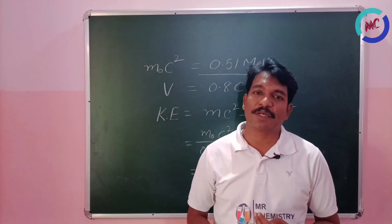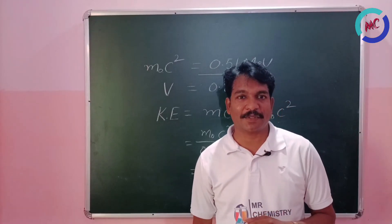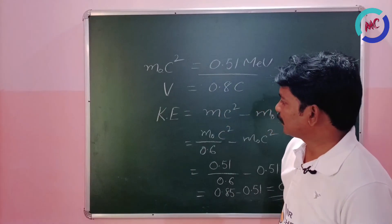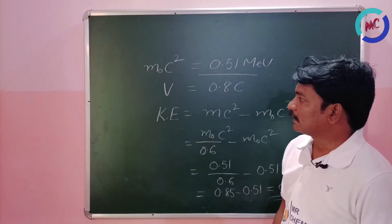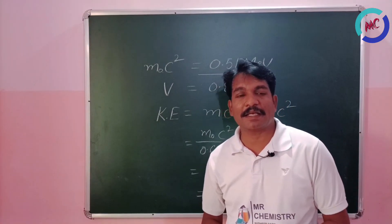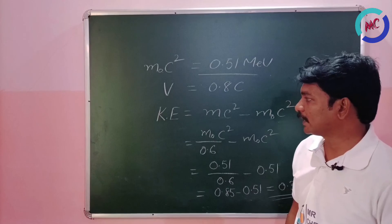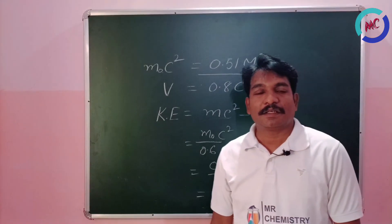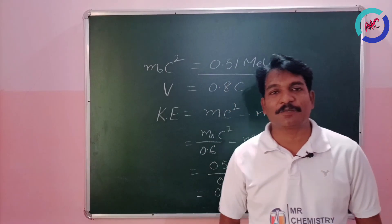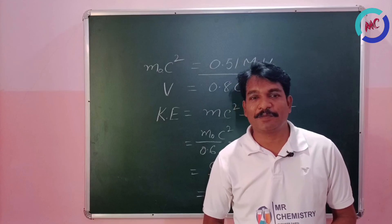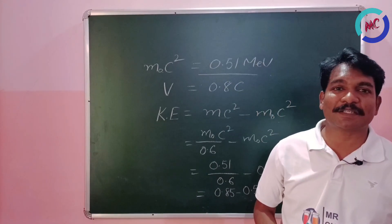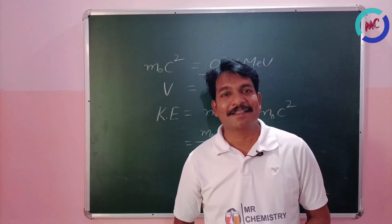This is one of the important concepts from atomic structure, important for JEE and NEET students. Don't forget how to calculate the mass of a moving electron and how to calculate kinetic energy using the mass of a moving electron. In the description I will give a few more examples for you to solve. If you have any doubts, please feel free to comment. Don't forget to subscribe to our channel, Mr. Chemistry. Thank you!